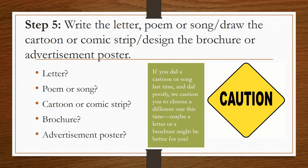Step number five is to either write a letter, a poem, or a song; draw a cartoon or comic strip; or design a brochure or advertisement poster that shows the position that you chose, the reasons why, and includes two primary sources interpreted correctly and explained as to how they support your position.